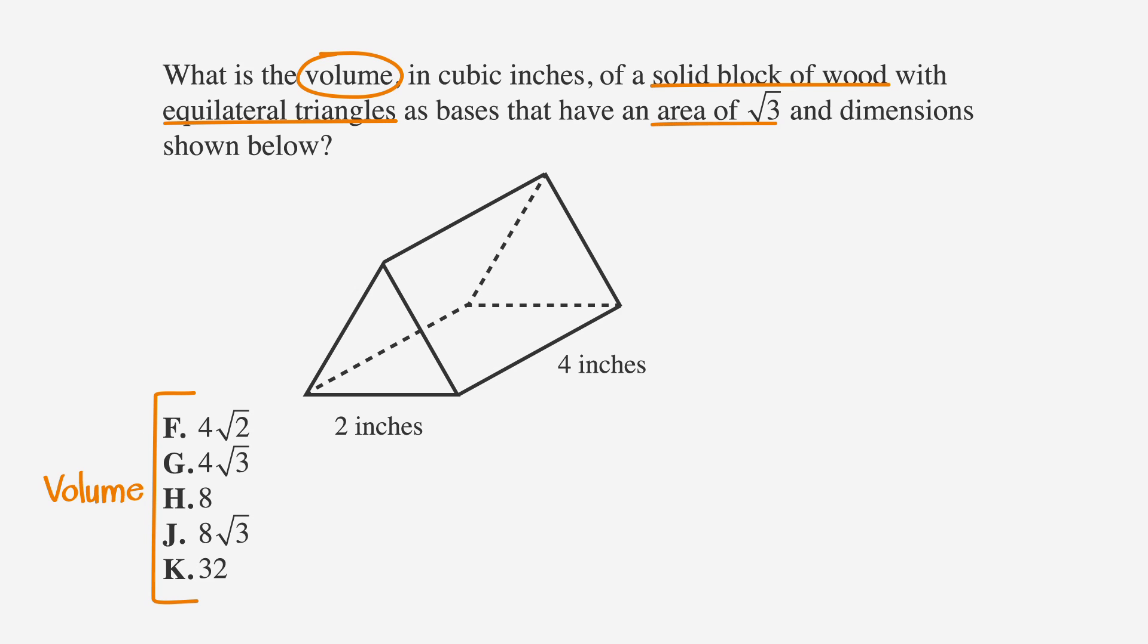We know that the square root of three is the area of the bases, so let's mark that. In this case, the height is horizontal and the distance between the bases is four. We're used to thinking of height as a vertical distance, but it's always the distance between the bases.